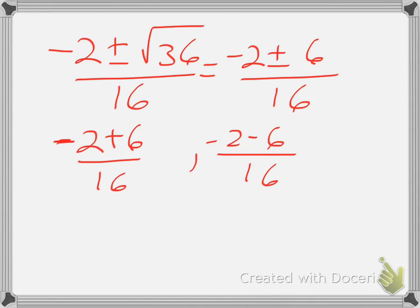And when I reduce each of these, this gives me 4 over 16, which is 1 fourth. And this gives me negative 8 over 16, which gives me negative 1 half.